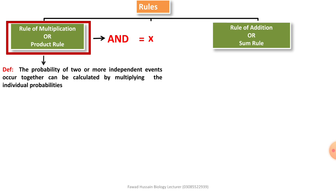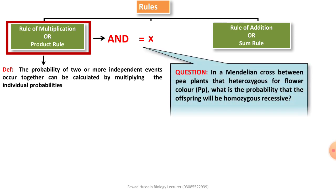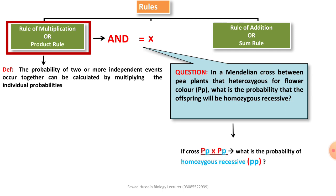अगर आप probability calculate करना चाहते हो एक event का या more than two events का, तो उसकी probability calculate करने के लिए आपको individual probabilities को multiply करना होगा। अब यहाँ पर एक question है जिसको simply समझाता हूँ कि इस question में क्या given है और क्या required है।